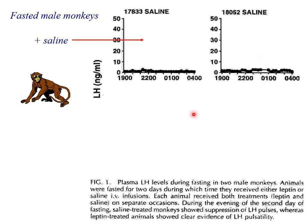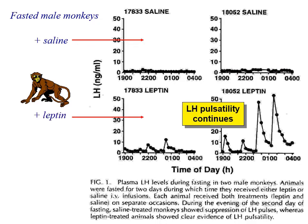Where was leptin acting? It would be expected to act on LH pulsatility, working on the hypothalamus to drive the GnRH pulse generator. Looking at fasted male monkeys — whose LH pulses go down when fasted — treating them with leptin restores LH pulsatility compared to saline-treated animals.